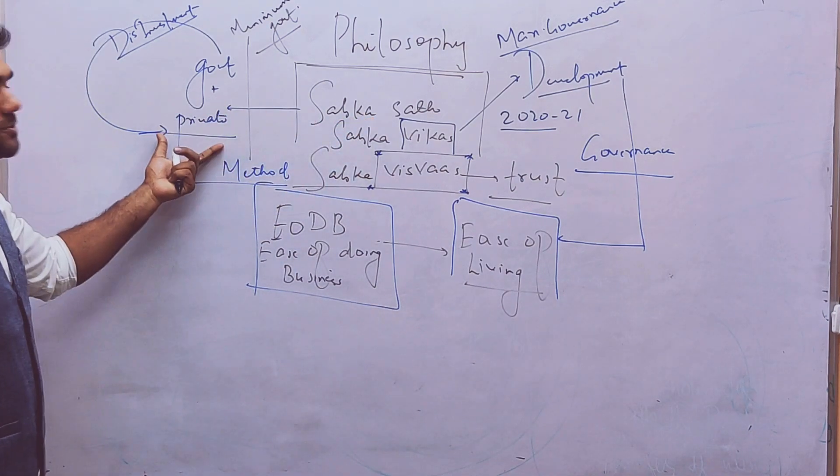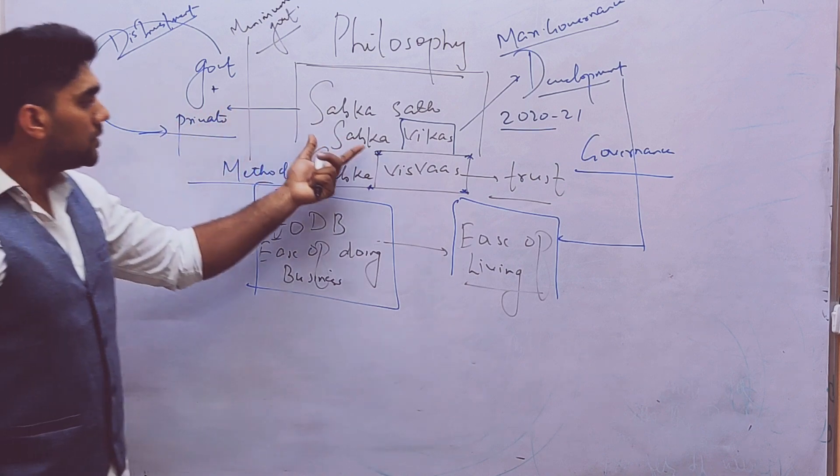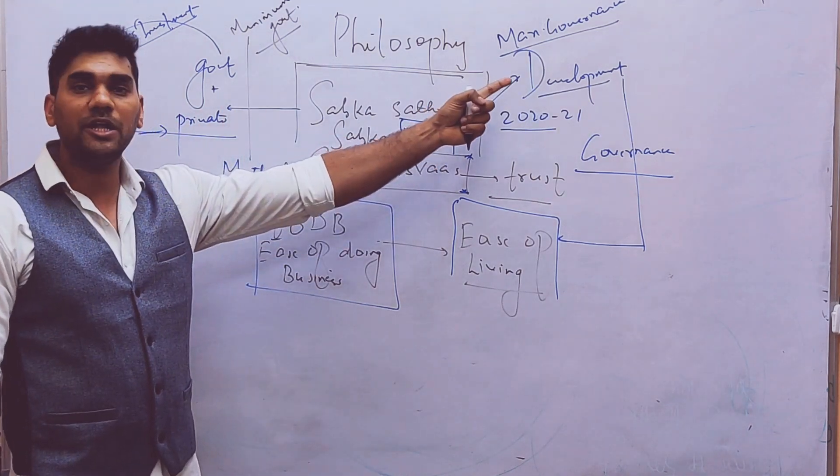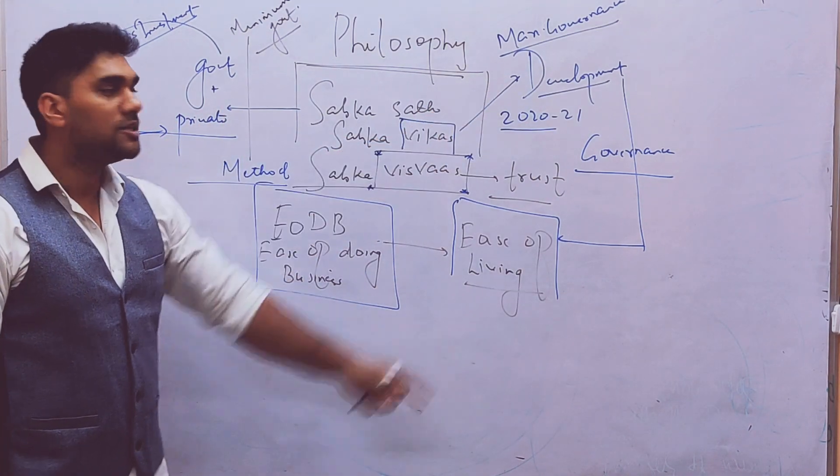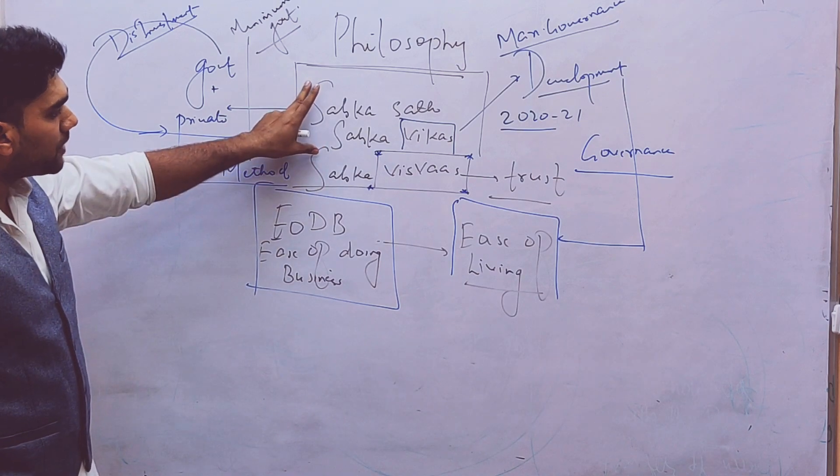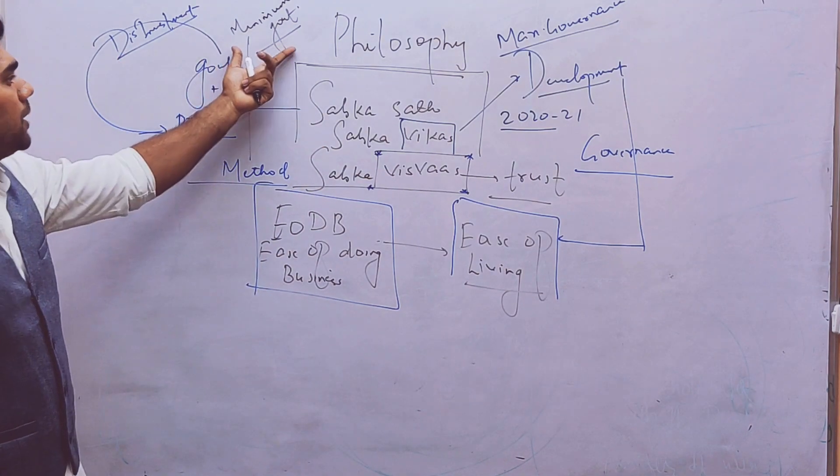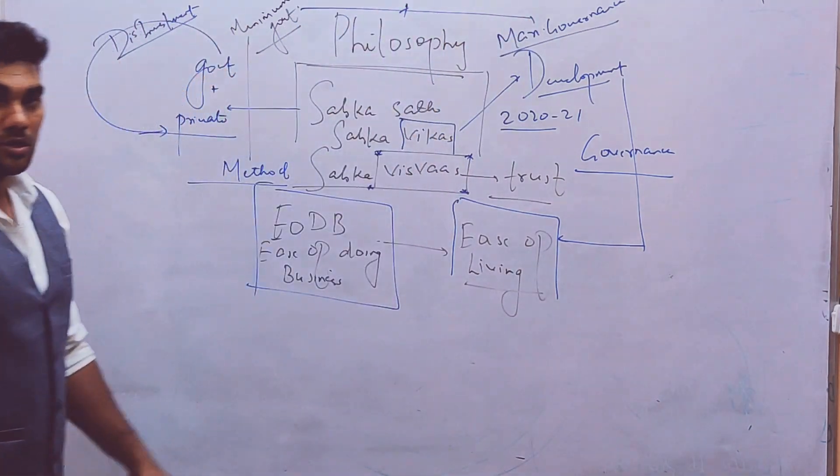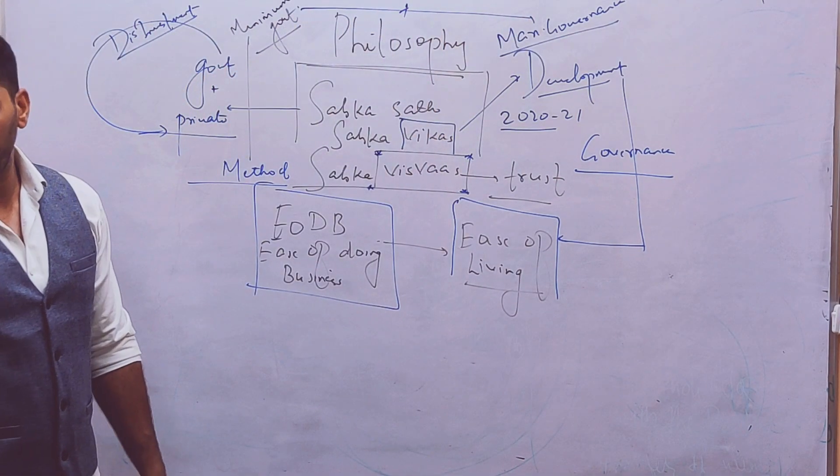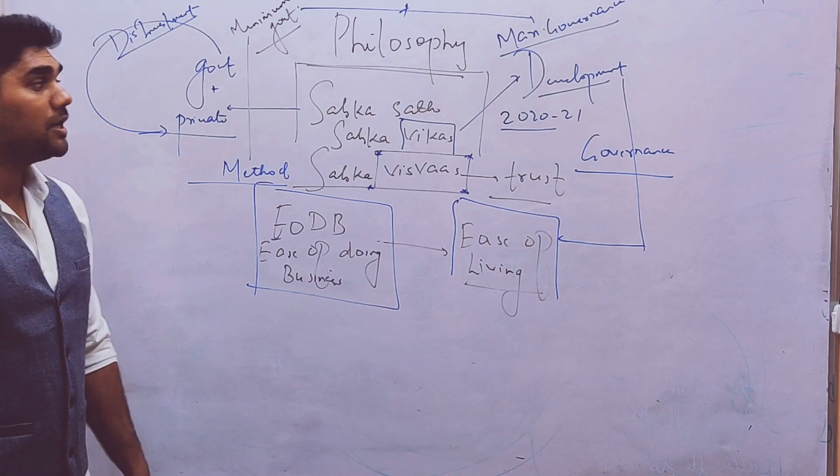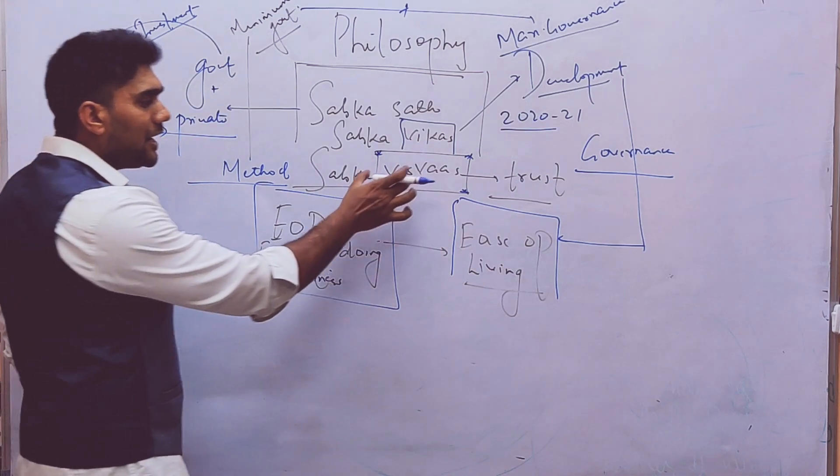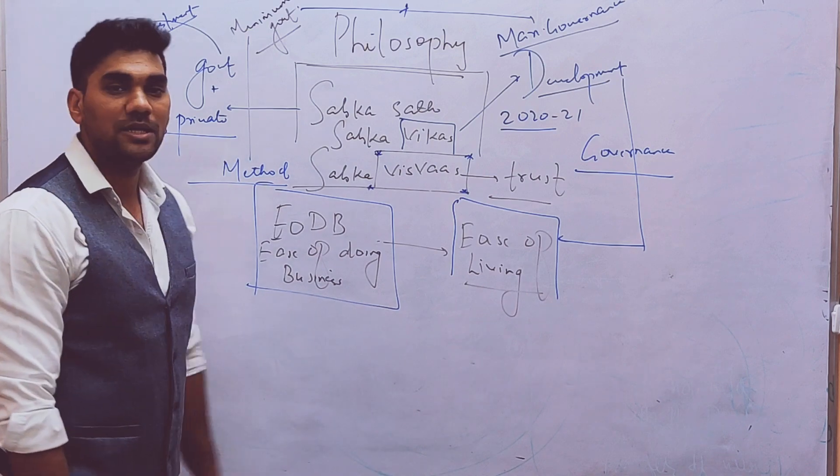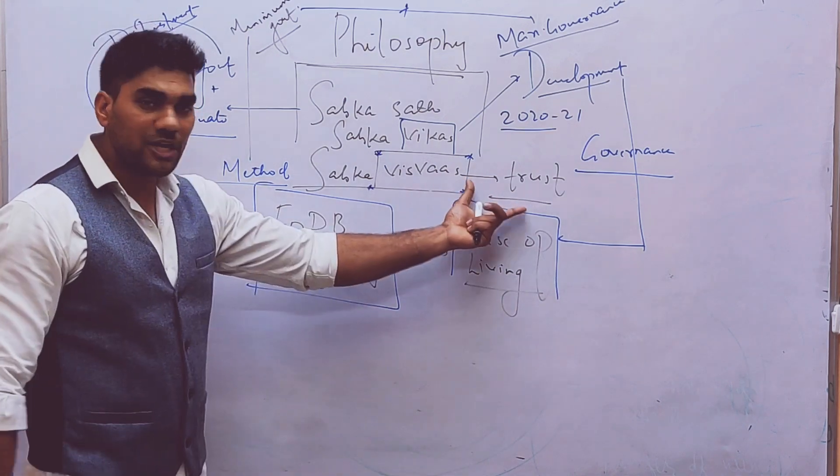Sabka means government plus private sector. Vikas means governance, the objective of governance. That means the government with this Sabka Saath Sabka Vikaas supports the philosophy of minimum government and maximum governance. This is the government's philosophy. And at the same point of time, now a new term is being added - Vishwaas. Because there is a lack of trust.